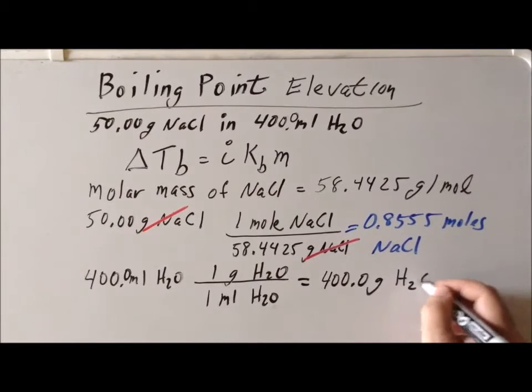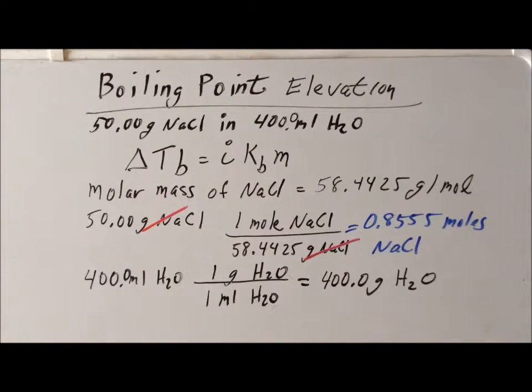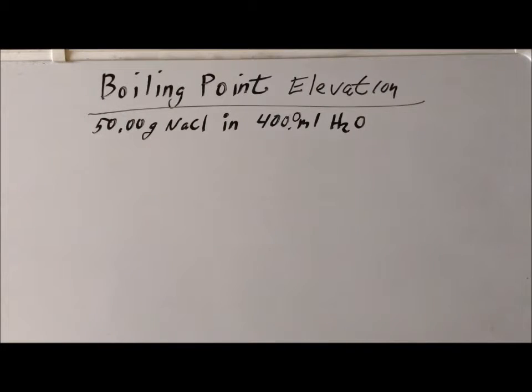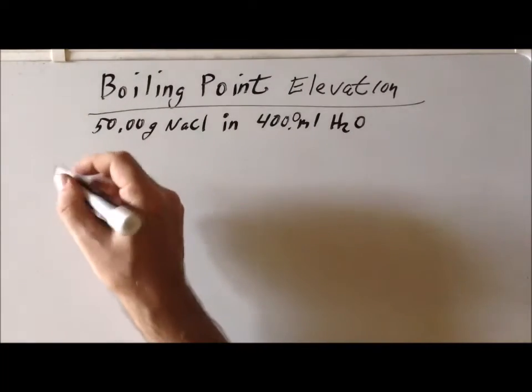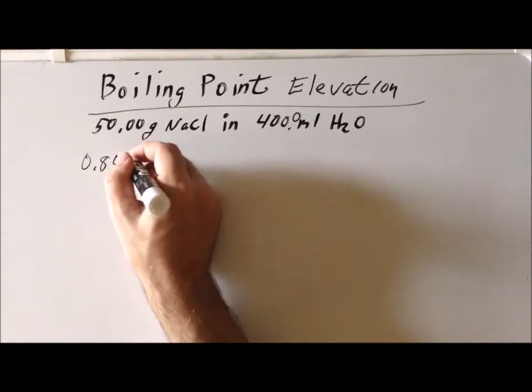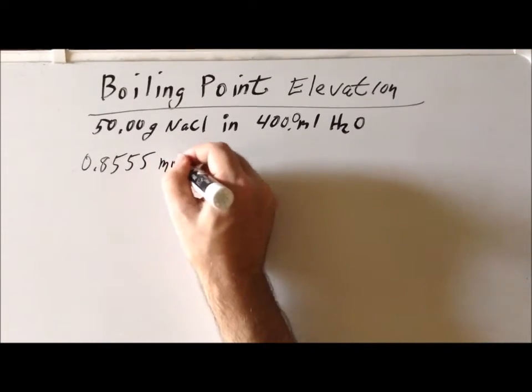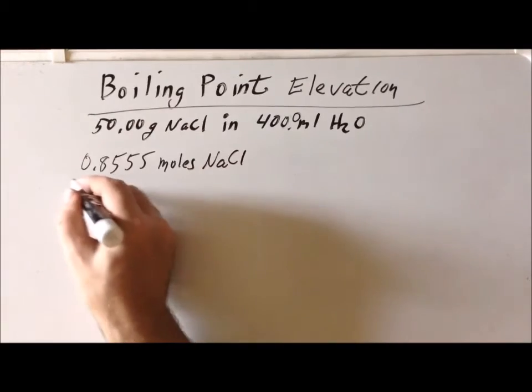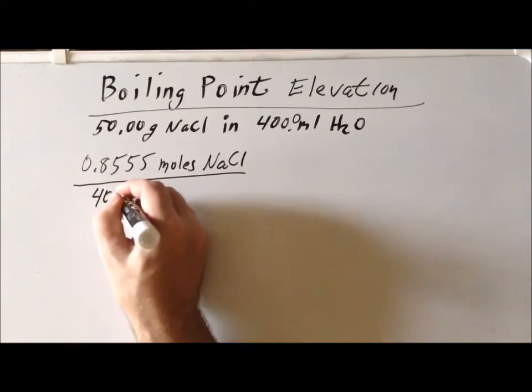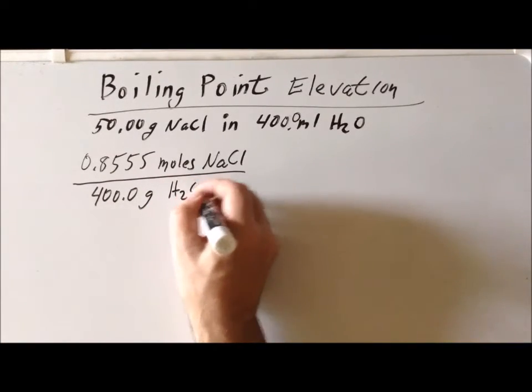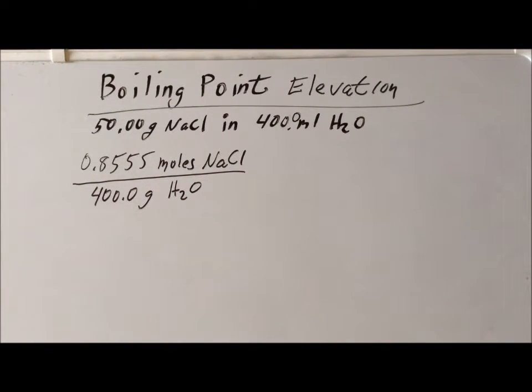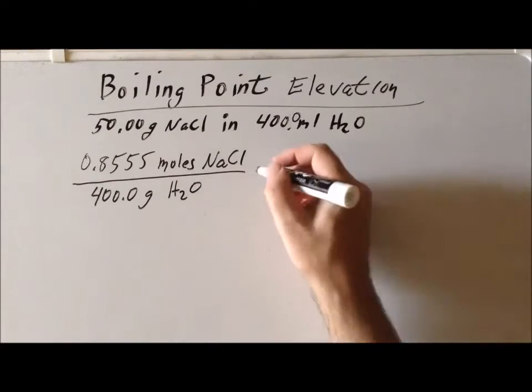This is a very useful fact to remember because it comes up very often. When we multiply through, we get that the mass of the solvent is going to be 400.0 grams of H2O. That gives us the number of moles of the solute and the mass of the solvent.